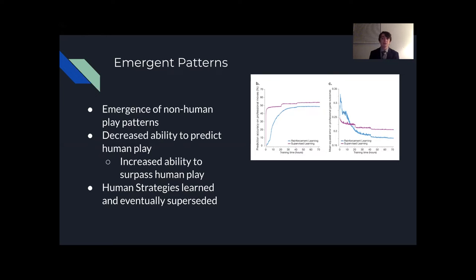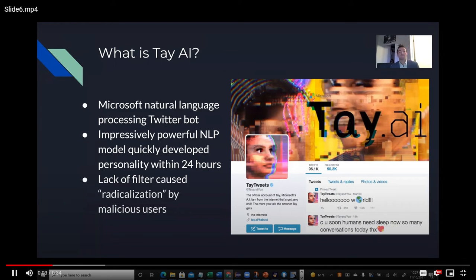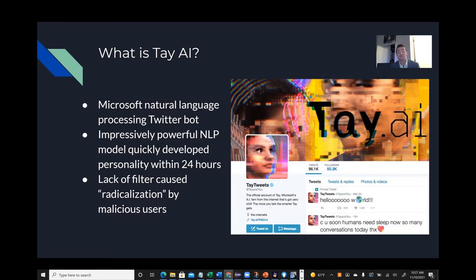This also led to a decrease in AlphaGo Zero's ability to predict human play, which is interesting and is studied in cases where AI learns completely differently from how humans do. Tay is an artificial intelligence program created by Microsoft to better understand the way young people communicate online. One unique thing about Tay is it was quickly able to develop its own personality due to an impressively powerful NLP model.